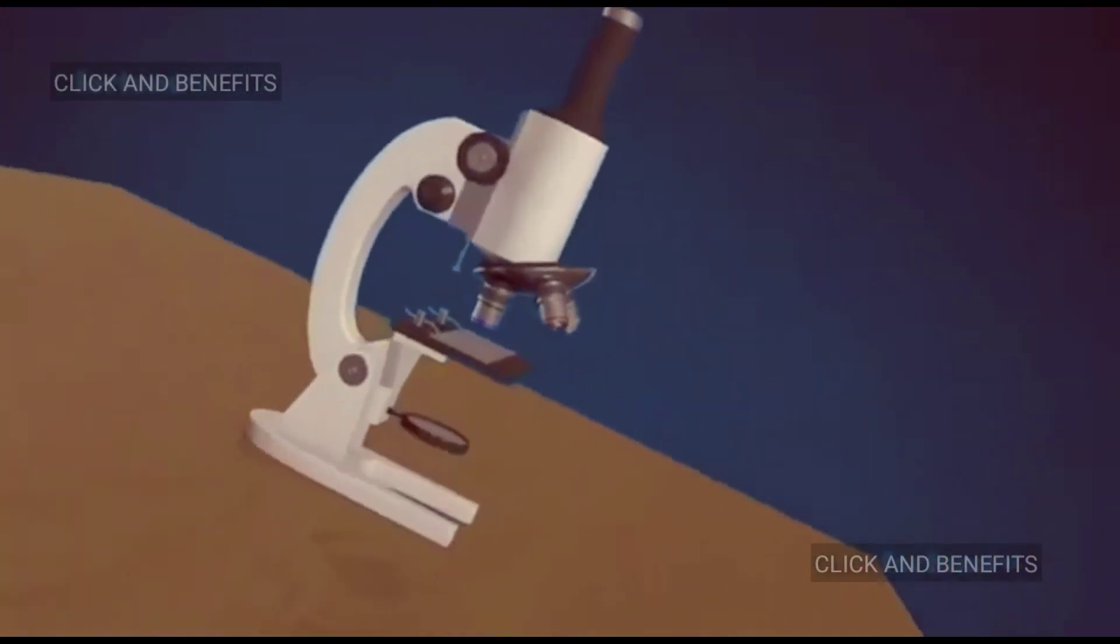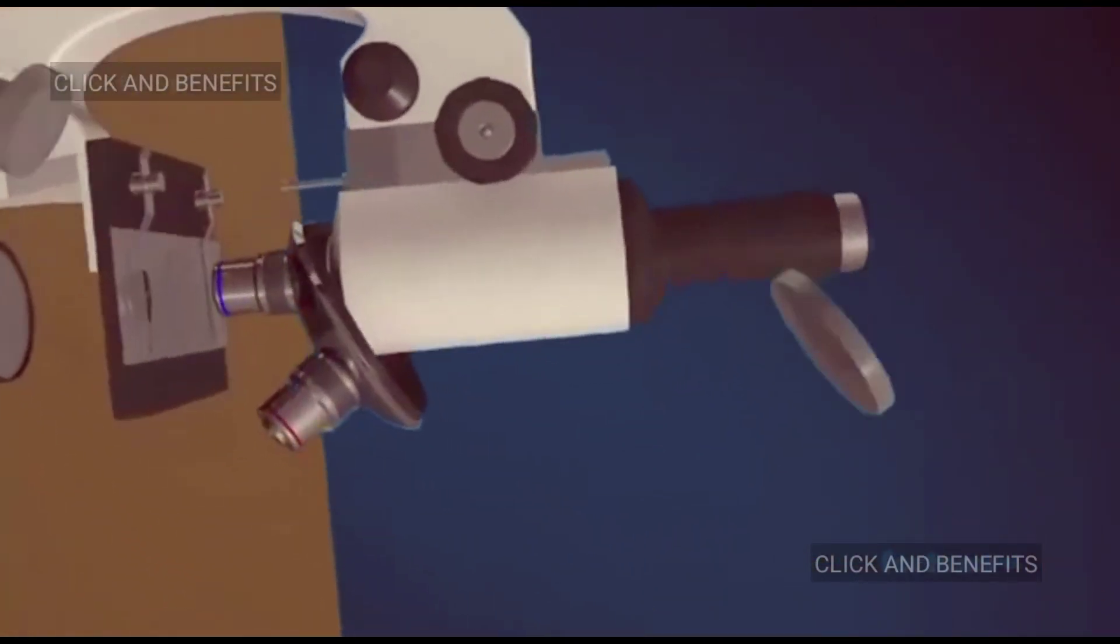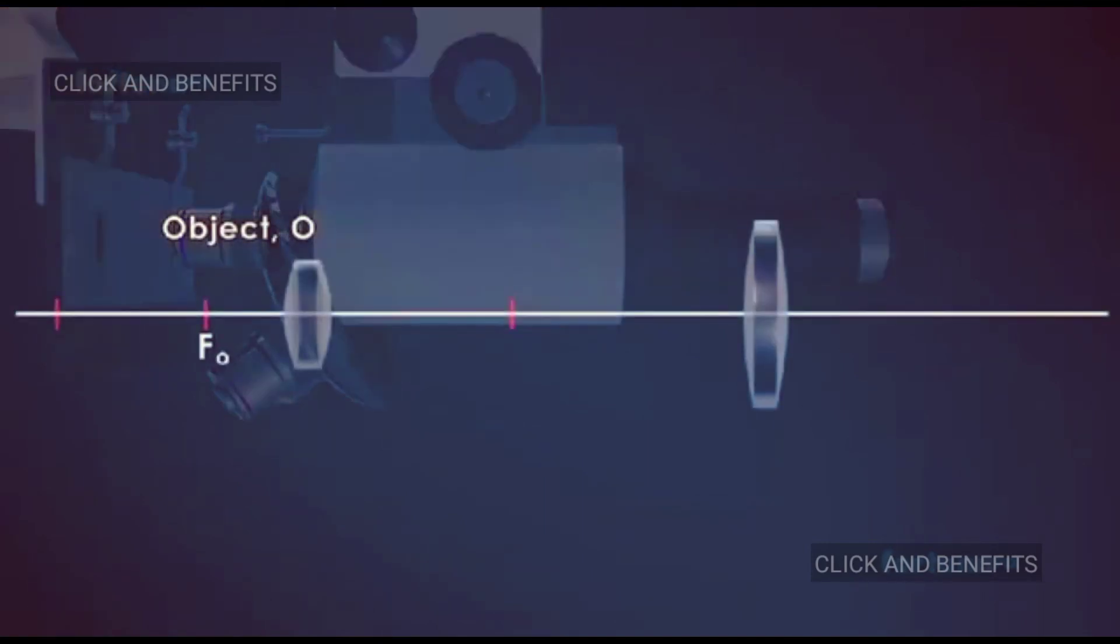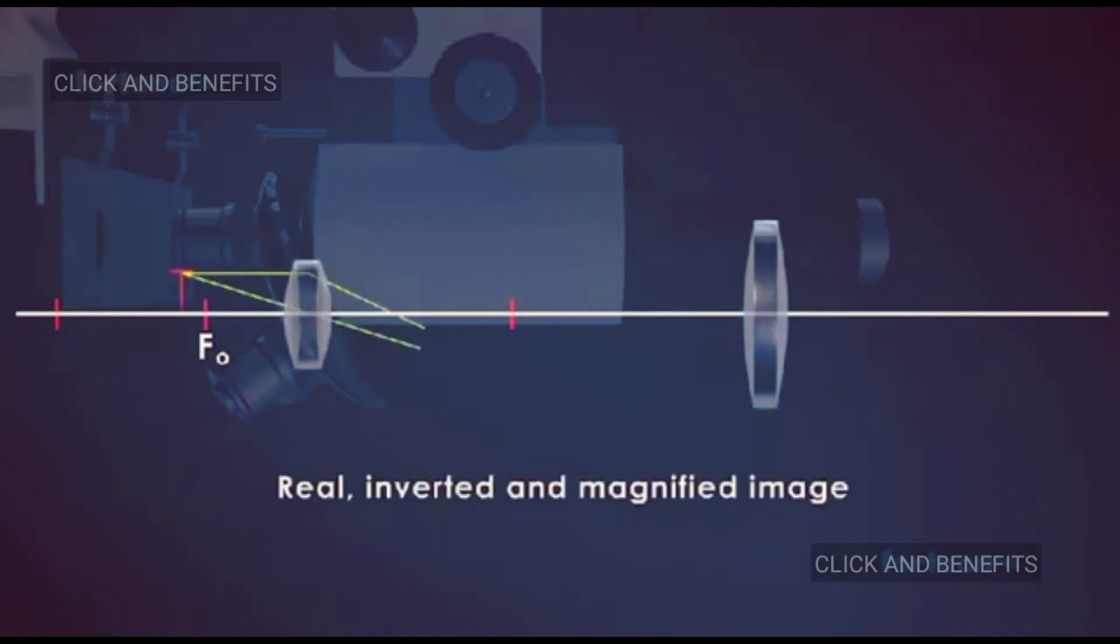Working of the compound microscope: The object o is placed just outside fo, the focus of the objective lens. A real, inverted, and magnified image i1 is formed. The magnified image i1 acts as an object for the eye lens.